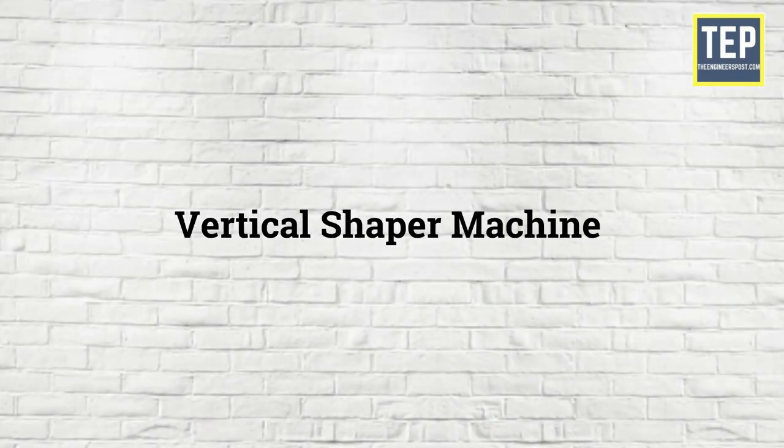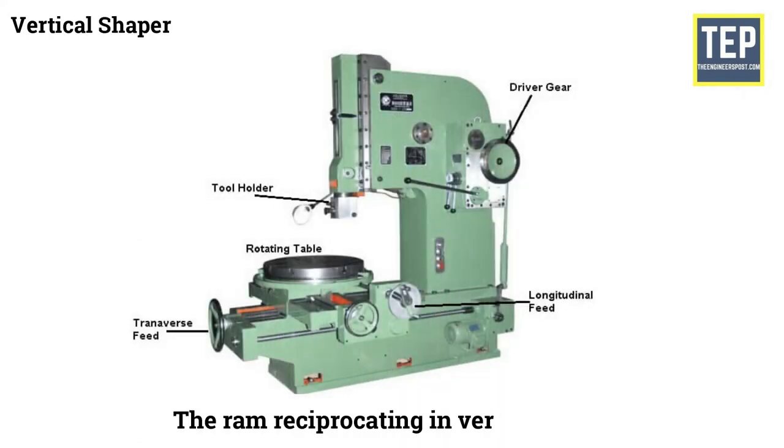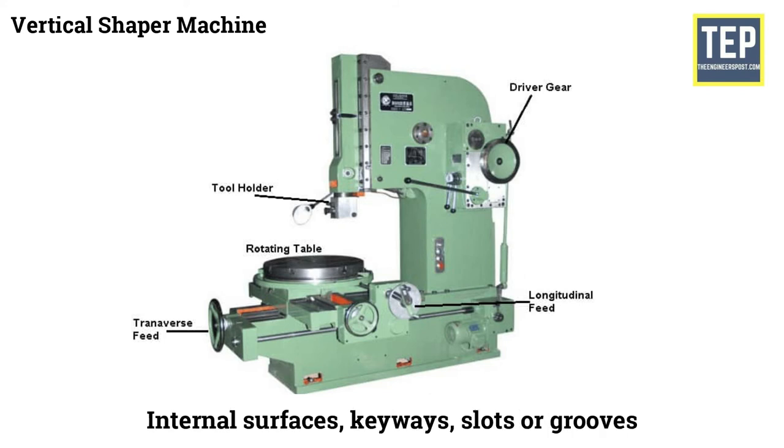Vertical Shaper Machine: In these types of Shaper Machines the RAM reciprocates in vertical plane. In this the table holds the workpiece. Vertical Shapers may be crank driven, rack driven, screw driven or hydraulic power driven.